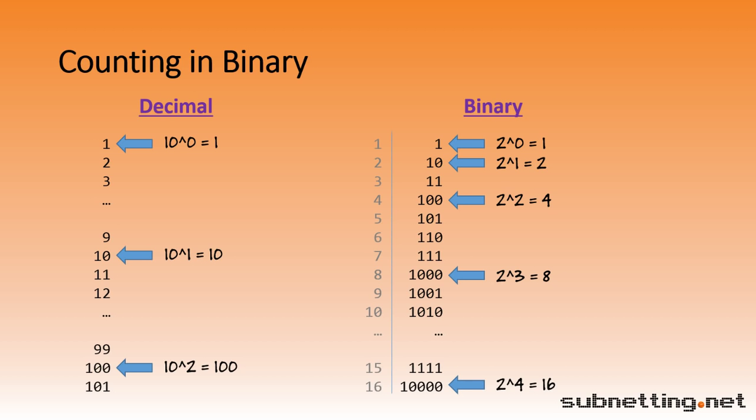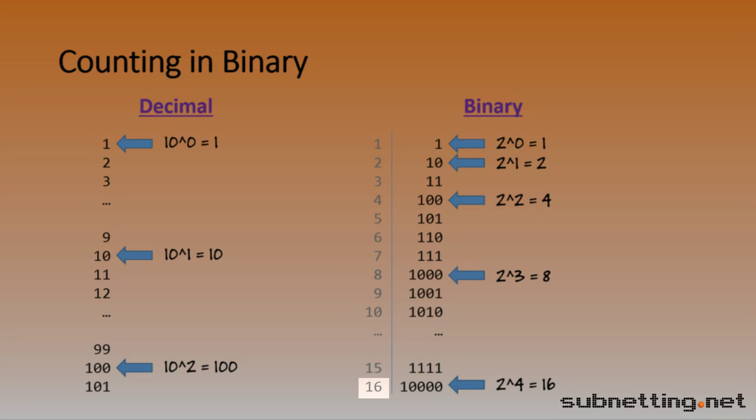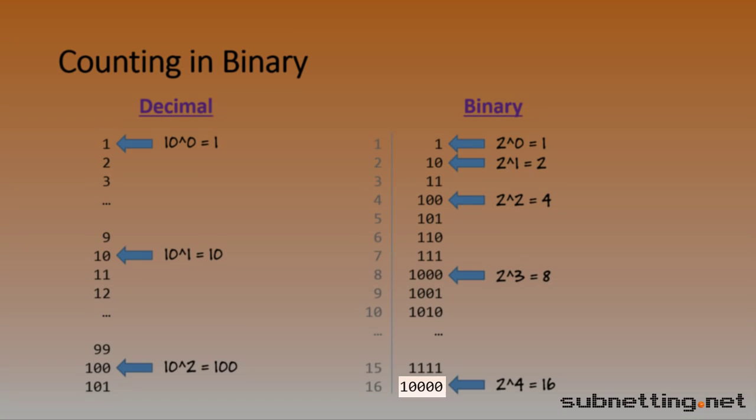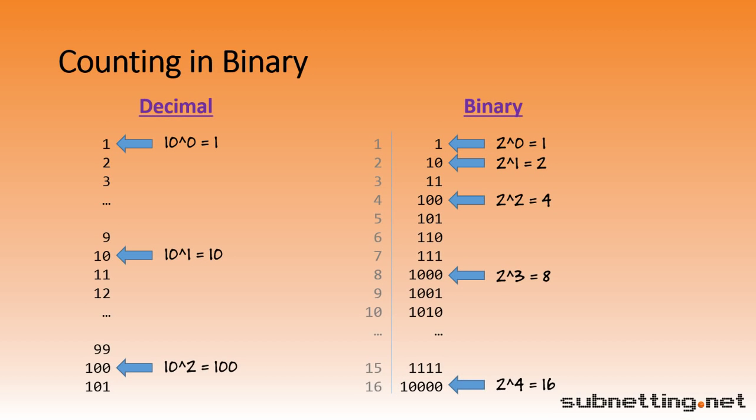It's important to realize that binary and decimal numbers aren't actually different in meaning. They only differ in the way they are represented. For example, the number 16 in decimal is represented by the digits 1, 6. But in binary, it is represented by 1, 0, 0, 0, 0. Both representations actually equal 16. They just look different.